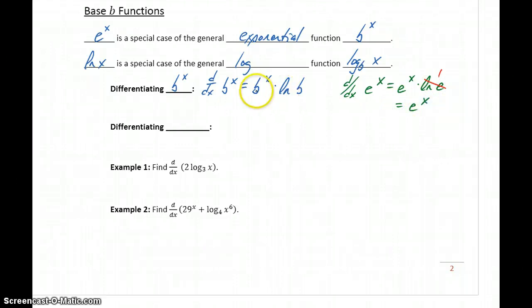In this case, though, where b is some value besides e, the natural log of b won't reduce, and we just have to keep that piece in there.